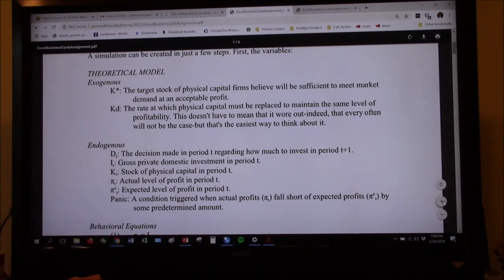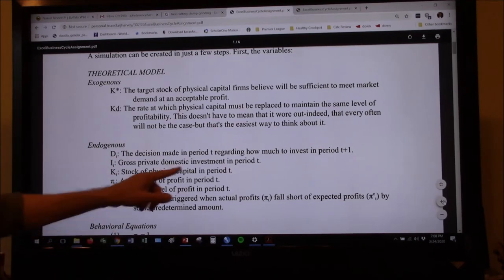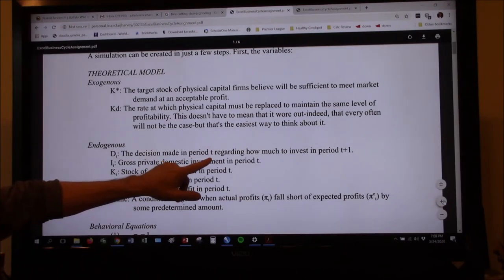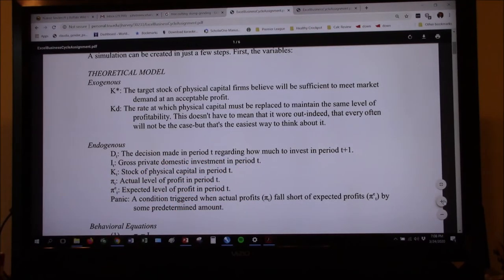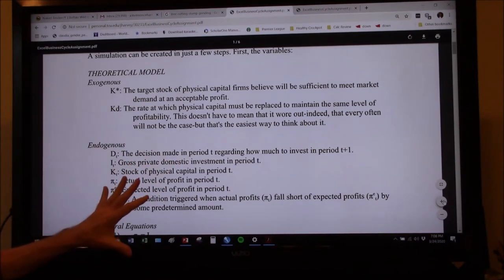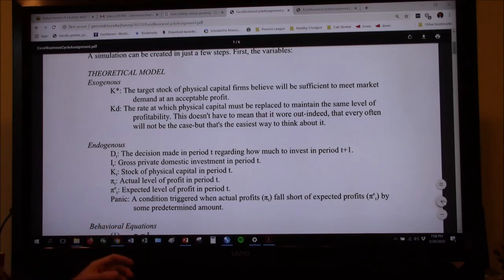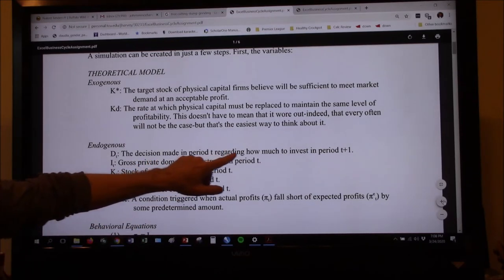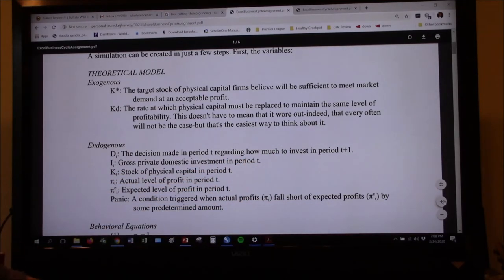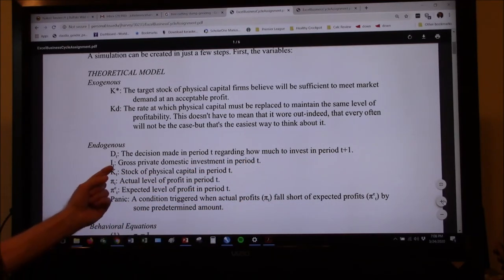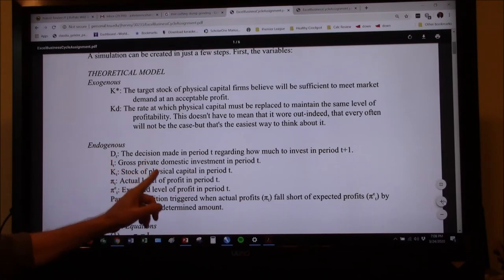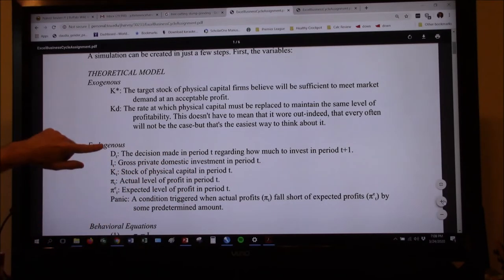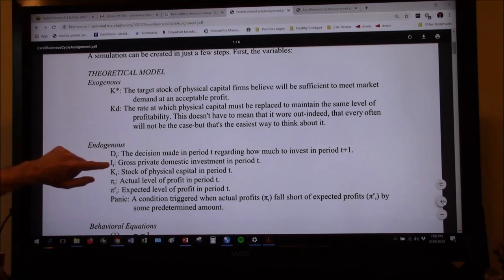D sub T is merely the decision made in period T. It's just a decision regarding how much to invest in period T plus one. So it'd be like we're deciding in, actually the way I put it together was I was implying that it was a quarterly model. So in first quarter, you decide how much you're going to invest. And this is physical investment in second quarter. I sub T is gross private domestic investment in period T. So D sub T would lead to I sub T plus one because that would be the investment in the next period.